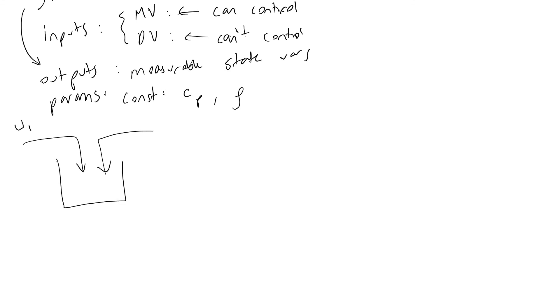In this system, two streams enter. Stream one has mass flow rate w1, mass fraction x1, and temperature T1. Stream two has the same variables, and the exit stream has mass flow rate w, temperature T, and composition x.